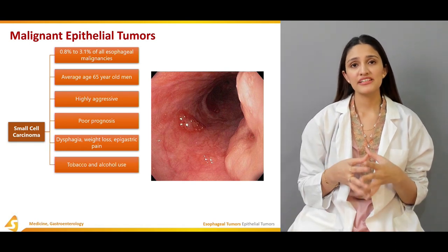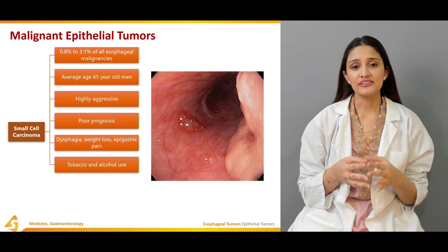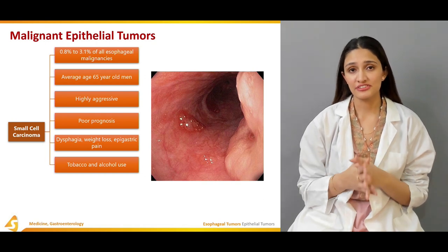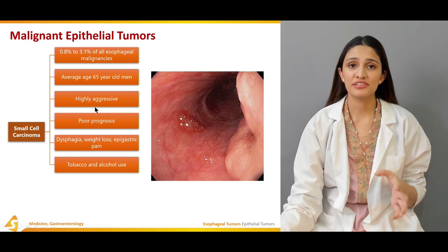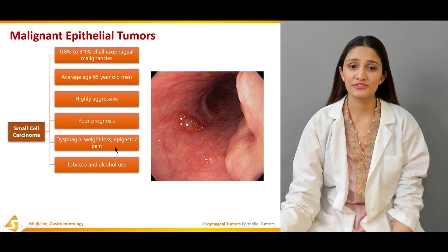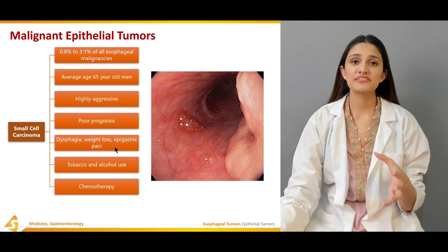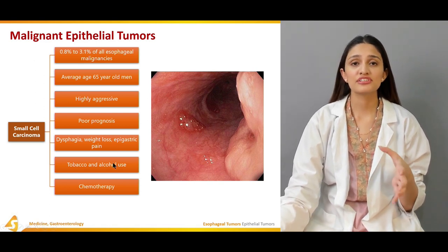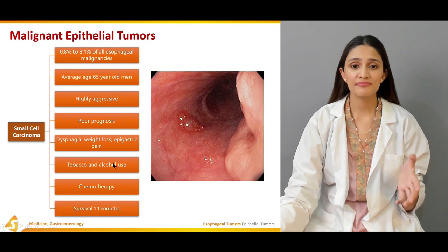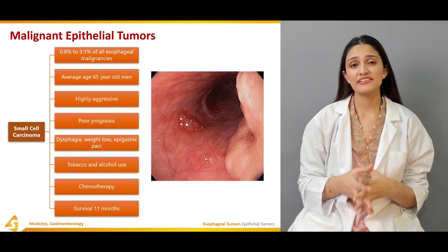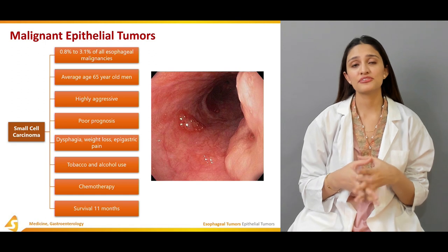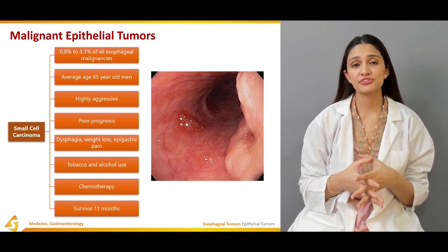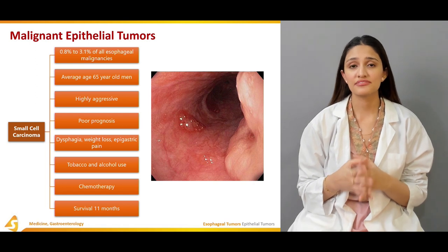Among patients presenting with small cell carcinoma, around 90% are smokers and around 70% have alcohol use. The main palliative treatment is chemotherapy. The survival rate is almost 11 months after diagnosis, and the 2-year survival rate is around 5%.